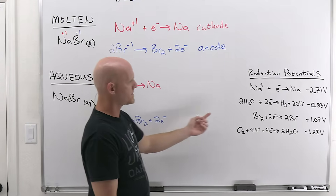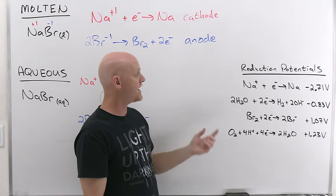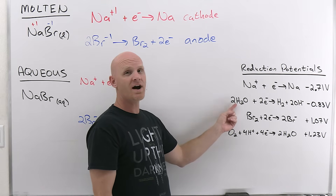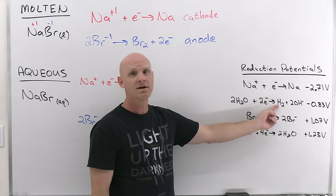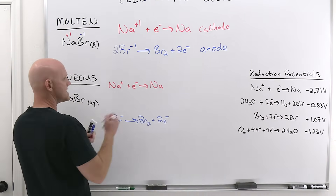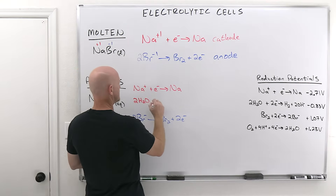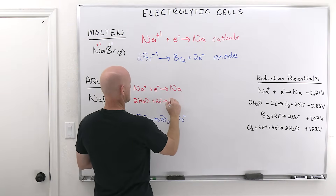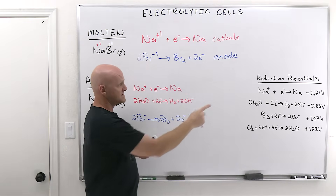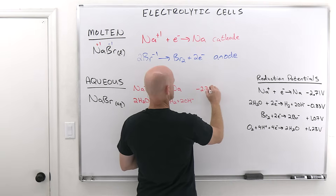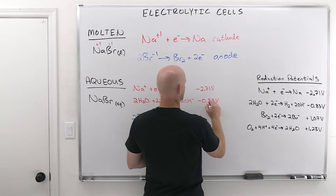If you take a look at water, hydrogen is in the plus one oxidation state and oxygen is in the minus two oxidation state. When you do the reduction, the hydrogen goes to its elemental form. So here's your other option at the cathode: 2H₂O + 2e⁻ → H₂ + 2OH⁻. Looking at the values from the table: negative 2.71 volts for sodium reduction versus negative 0.83 volts for water reduction.